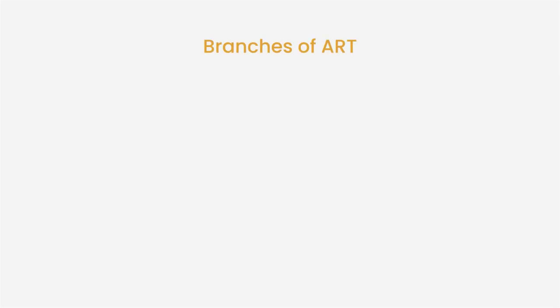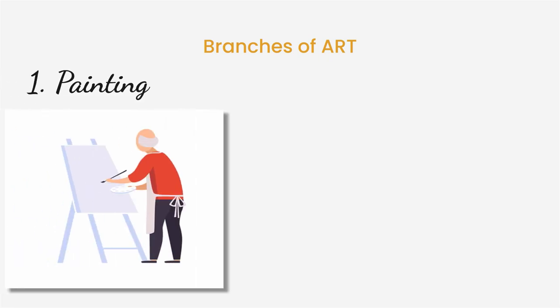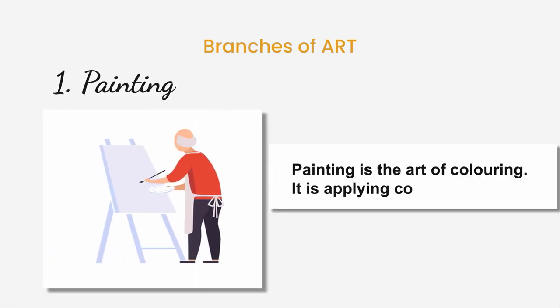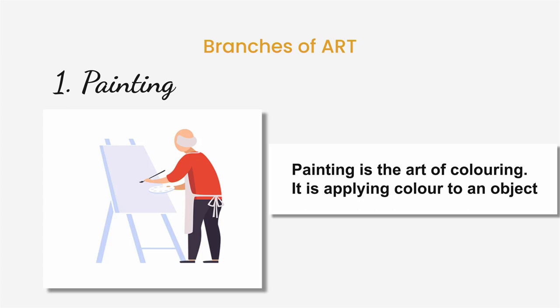Now, branches of art. What are the branches of art? Number 1: Painting. Painting is the art of coloring. It is applying color to an object.